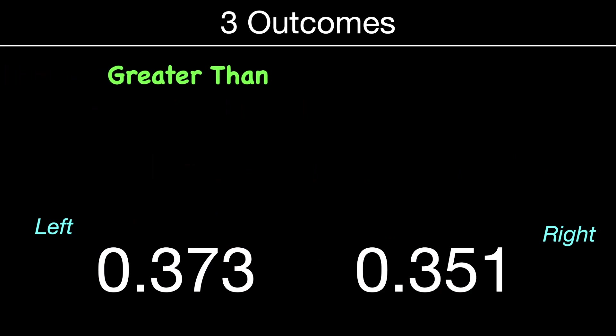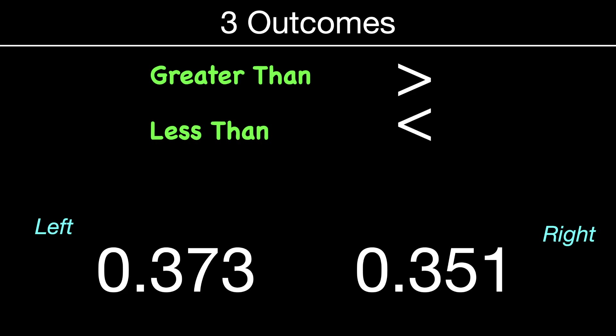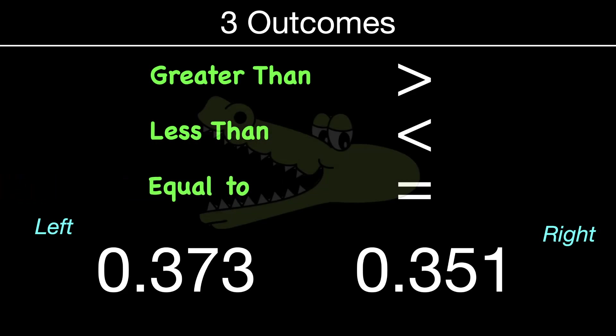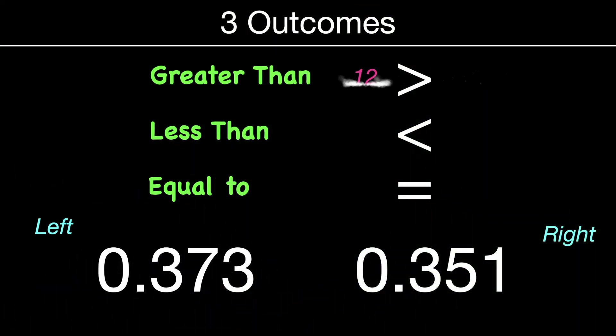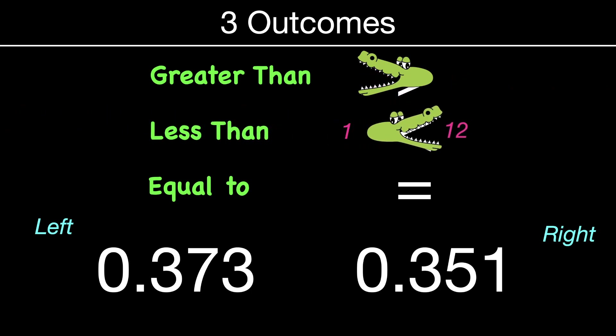When you compare numbers, there are three outcomes: are they equal to each other, is one greater than the other, or is one less than? We probably have all learned about the hungry alligator — it's really not a bad strategy. The hungry alligator always wants more, and the open symbol goes to the greater number.